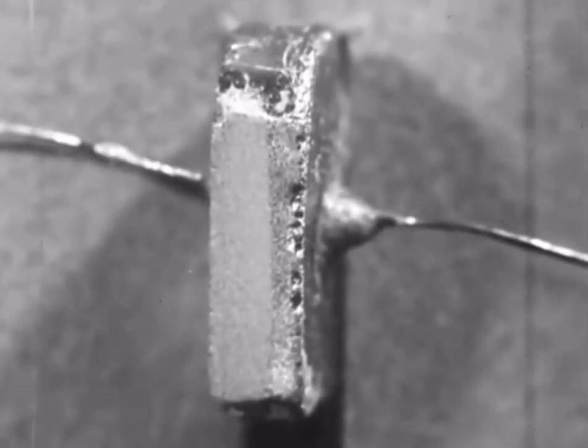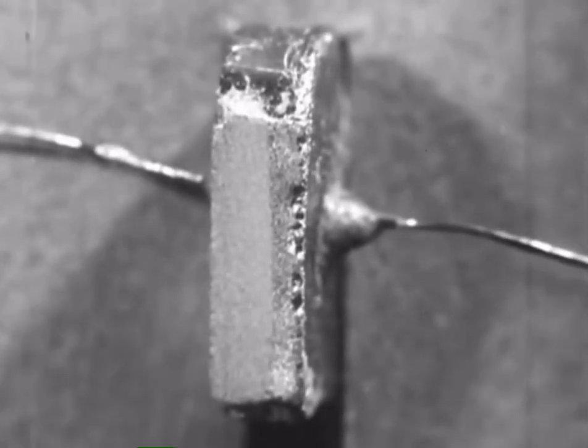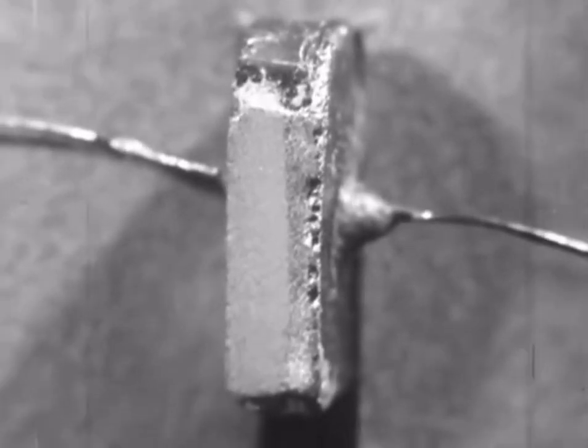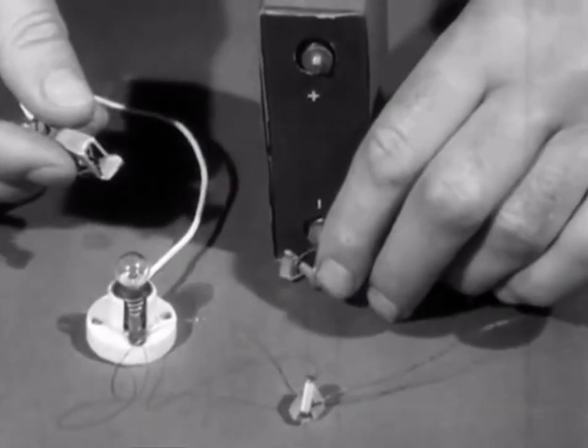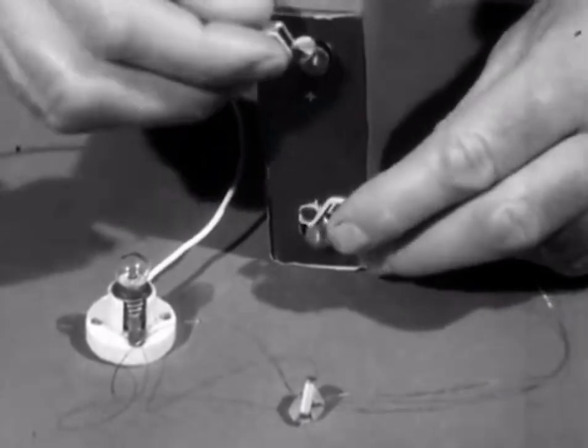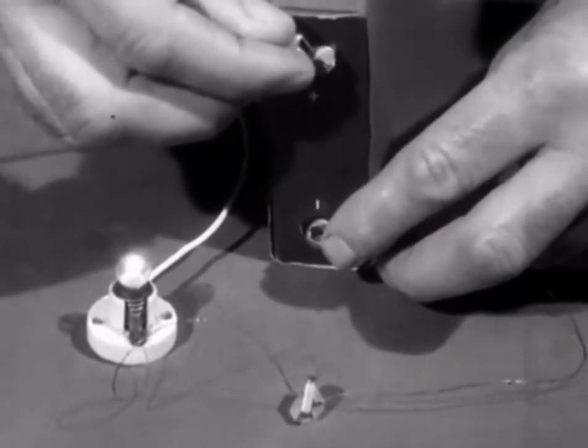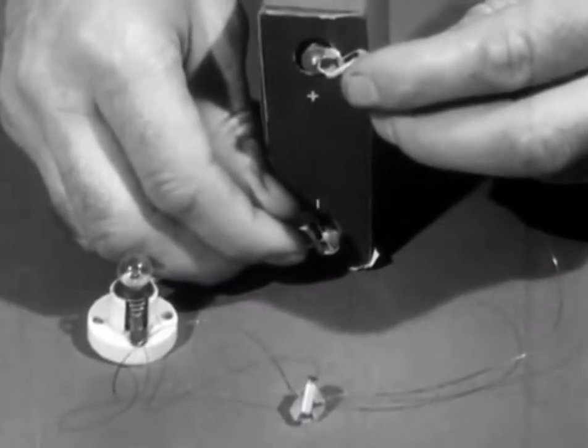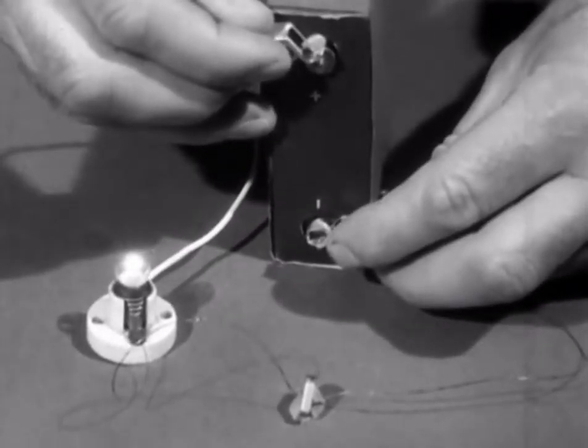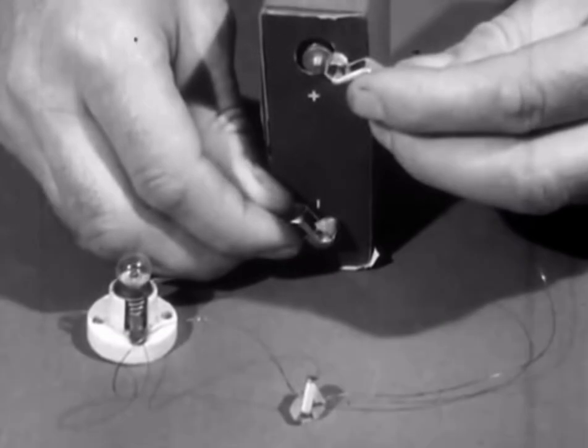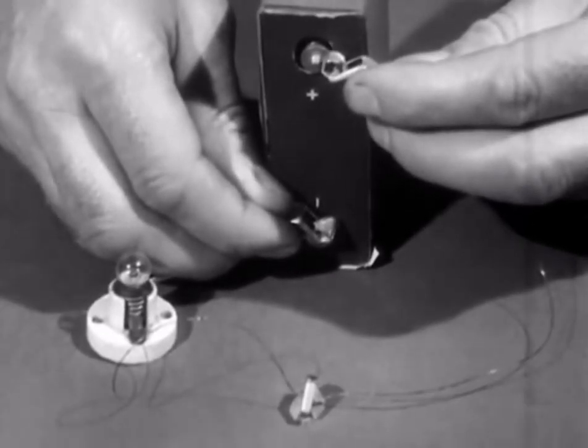Here is a piece of P-type and N-type germanium joined together. You can just see the junction. If now we connect the P-type to the positive pole of the battery, and the N-type to the negative pole, the lamp lights. If we reverse the voltage, the lamp does not light. The current only flows in one direction. This is the principle of the germanium diode.